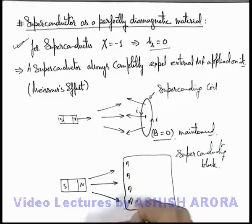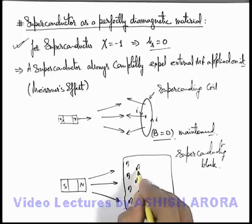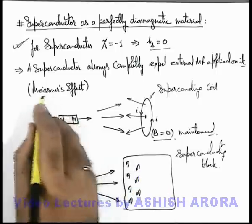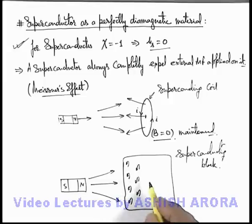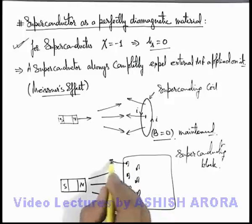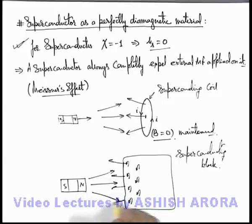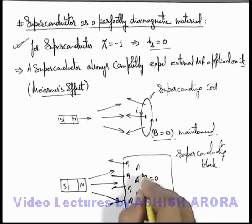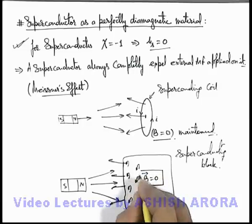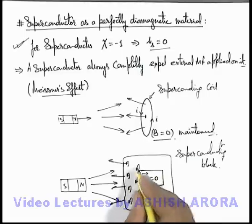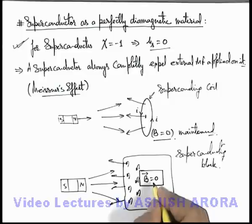But these currents we don't call eddy currents. Details of these miniature currents are there in Meissner's effect, but right now here we can say that similar to eddy currents some miniature currents are developed up to a strength that these miniature currents oppose the external field in such a way that inside, the net external magnetic field becomes zero. Or you can say that it induces intensity of magnetization up to a level that net magnetic field inside is zero.